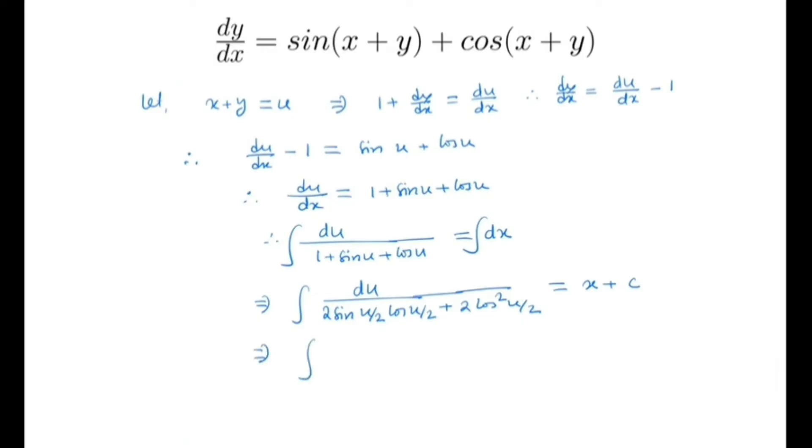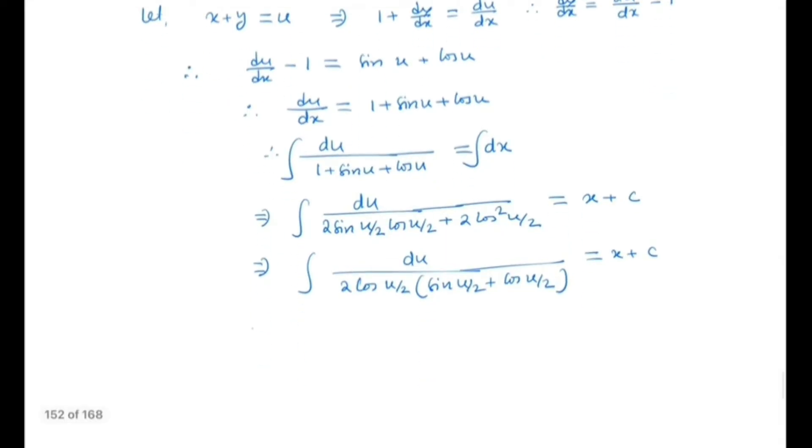So we can write it as du by 2 cos(u/2) times sin(u/2) plus cos(u/2). So in the denominator it will be 2 times tan(u/2) plus 1 is equal to x plus c.